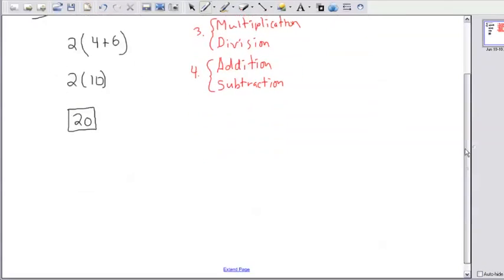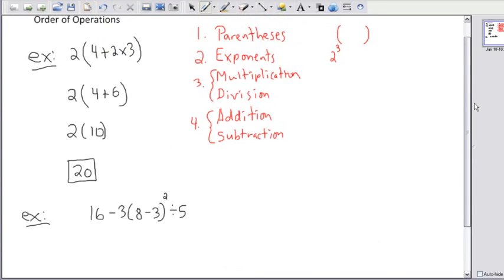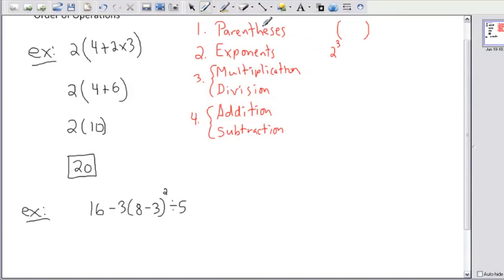Now I can do another example for you. I think it might be a good idea to do a more complicated one. So let's just say I have something a little bit tougher. So let's say I have 16 minus 3 times 8 minus 3. I'll maybe square that and divide that by 5. That one looks really complicated. But again, I just deal with it like this. First, I do the parentheses.